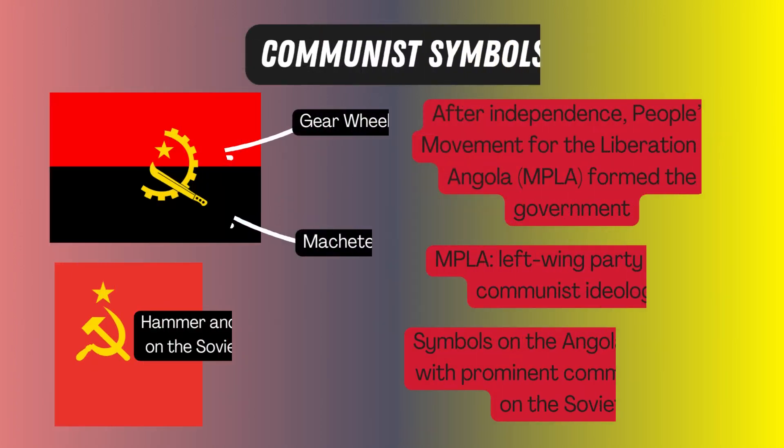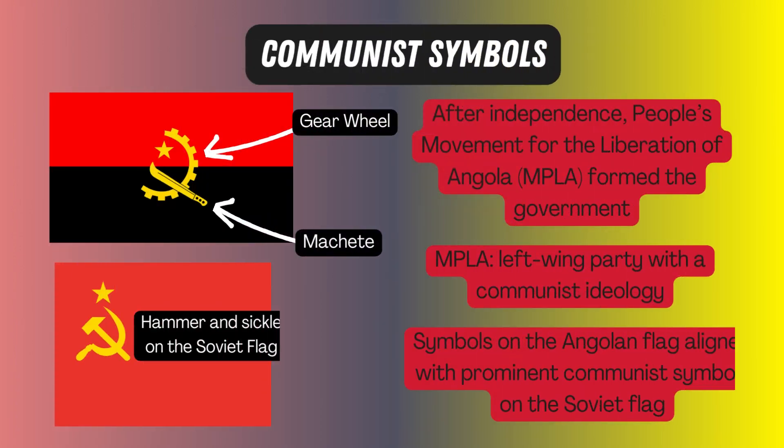When Angola got independence, the People's Movement for the Liberation of Angola, or MPLA, a left-wing political party with a communist ideology, formed the government. Hence, the half-gear wheel and the machete were adopted as symbols to align with the prominent communist symbols of hammer and sickle on the Soviet flag.